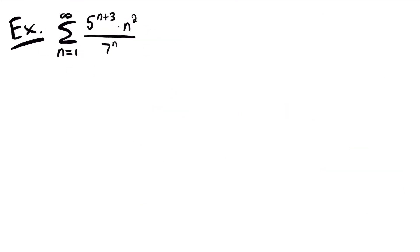Our last example is the sum from n equals 1 to infinity of 5 to the power of n plus 3 times n squared divided by 7 to the power of n. This series has a mixture of an algebraic expression n squared and two exponential parts, making it a good candidate for the ratio test. We identify a sub n as 5 to the power of n plus 3 times n squared divided by 7 to the power of n.